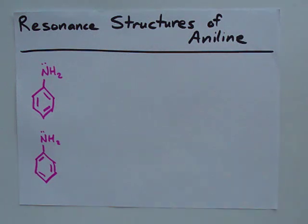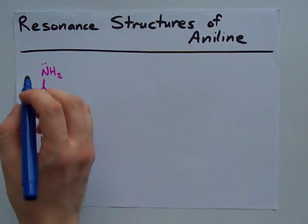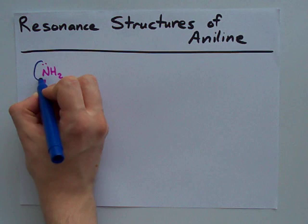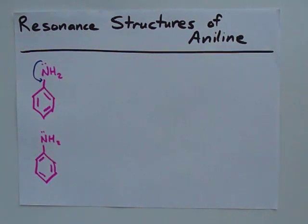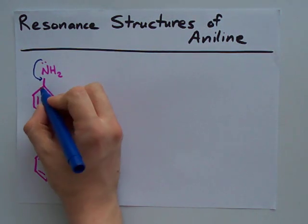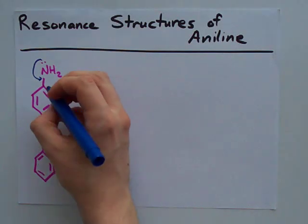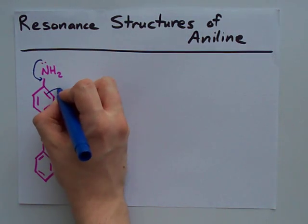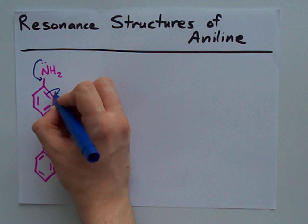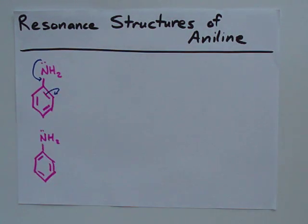The question is: how do you create more resonance structures? The only freedom you have right now is to take this lone pair of electrons on the N and move it to create a double bond here. But you can't do that yet because this carbon already has electrons around it and that violates the octet rule. However, this double bond can break open and the lone pair will sit on the carbon atom.